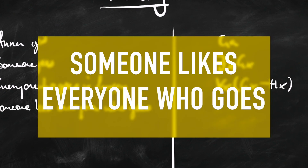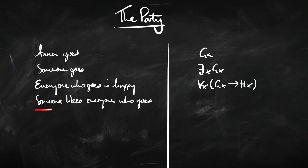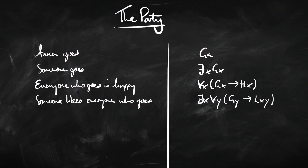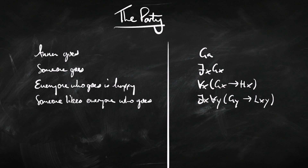'Someone likes everyone who goes to the party.' In this case we need two quantifiers — one for 'someone' and one for 'everyone' — in that order: there's someone X such that for everyone Y, if Y goes to the party, then X likes Y. If we ignore the outer 'someone' quantifier for a moment, we see: everyone who goes to the party gets liked by X. Then X is some person or other — so someone likes everyone who goes to the party.